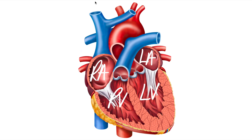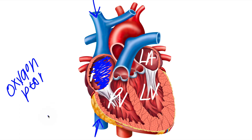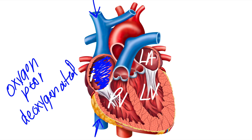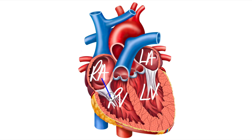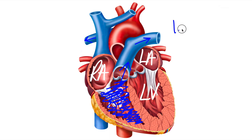Blood is going to pump throughout our body and then needs to get back to our heart. Gravity takes care of the blood in our head, and it's going to go in through our superior vena cava. The venous pump helps blood flow back into our inferior vena cava, and it's going to go into our right atrium and fill up there. It's shown in blue because it is oxygen poor — deoxygenated, meaning there is no oxygen on this blood. From the right atrium, blood moves through our tricuspid valve into the right ventricle, fills up, and then pumps through the pulmonary valve into the pulmonary arteries — the left and right pulmonary arteries — and goes to the lungs.